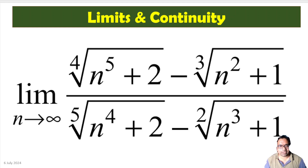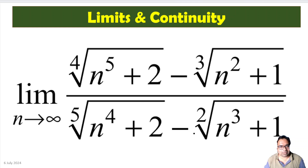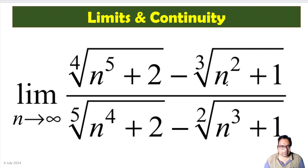We have the limit as n tends to infinity of: fourth root of (n^5 + 2) minus third root of (n^2 + 1), divided by fifth root of (n^4 + 2) plus square root of (n^3 + 1). We have fourth root, third root, fifth root, etc., and n tends to infinity.